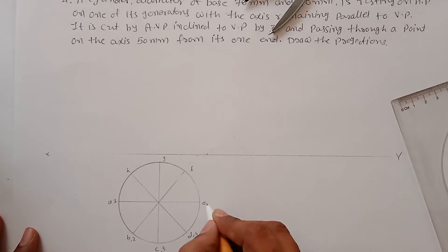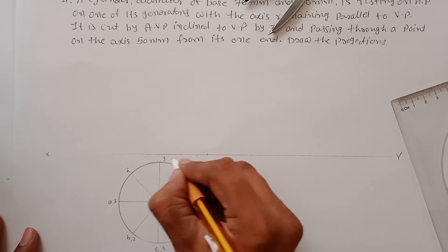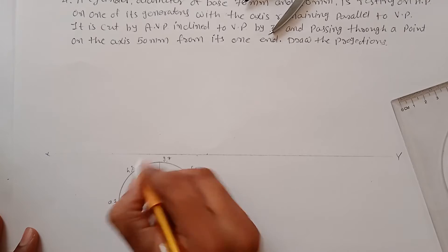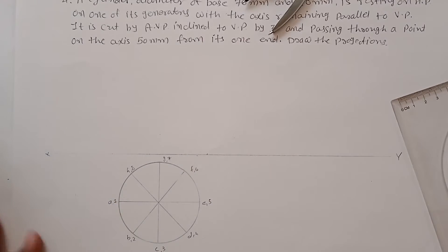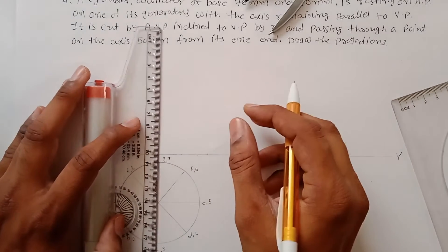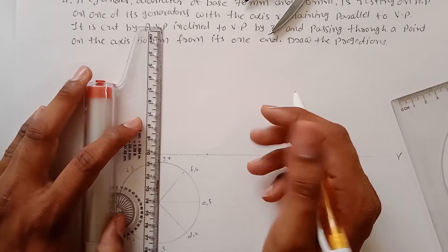Label the top part points as 1 through 8. These numbers represent the topmost part of the cylinder. Now transfer these points and draw the projections.